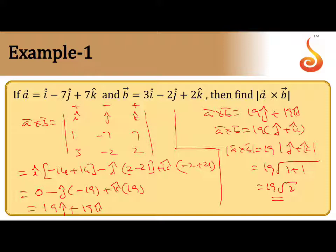So first of all write the formula and apply the determinant using the concept of determinant. First i cap into the minor, j cap into the minor, k cap into the minor. We learned so many things from determinants. Once you get the vector, take the magnitude of the vector only.